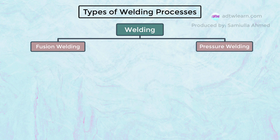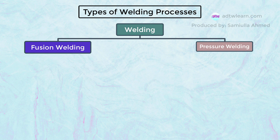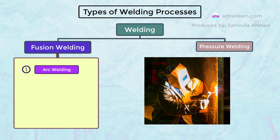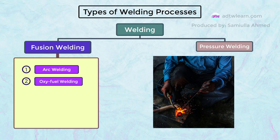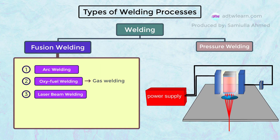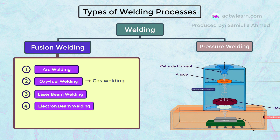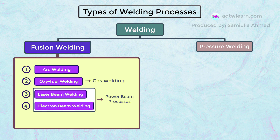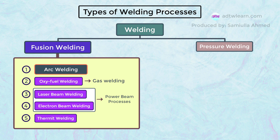Under fusion welding we have: first, arc welding; second, oxy fuel welding, also known as gas welding; third, laser beam welding; fourth, electron beam welding — laser beam welding and electron beam welding are collectively called power beam processes; and fifth, thermite welding.